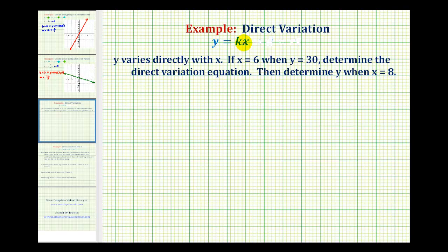Here's the direct variation equation: y equals k times x, where k is the constant of variation.